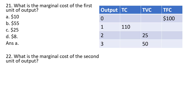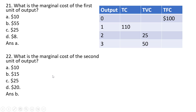Question 22 (continued). What is the marginal cost of the second unit of output? We need total cost at two units of output. Total fixed cost is $100 — that doesn't change with output. Adding $25 of variable cost gives total cost of $125. Going from $110 to $125 is a $15 increase in total cost, which represents marginal cost. Answer choice B.